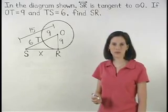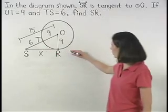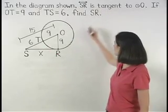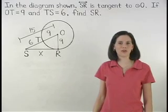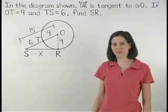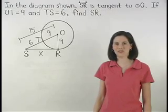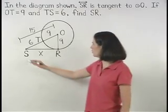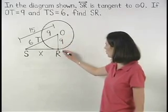To find the value of X, notice that we're given that line SR is tangent to circle O. And remember that if a line is tangent to a circle, then the line is perpendicular to the radius of the circle drawn to the point of tangency. So we know that line SR is perpendicular to radius OR.